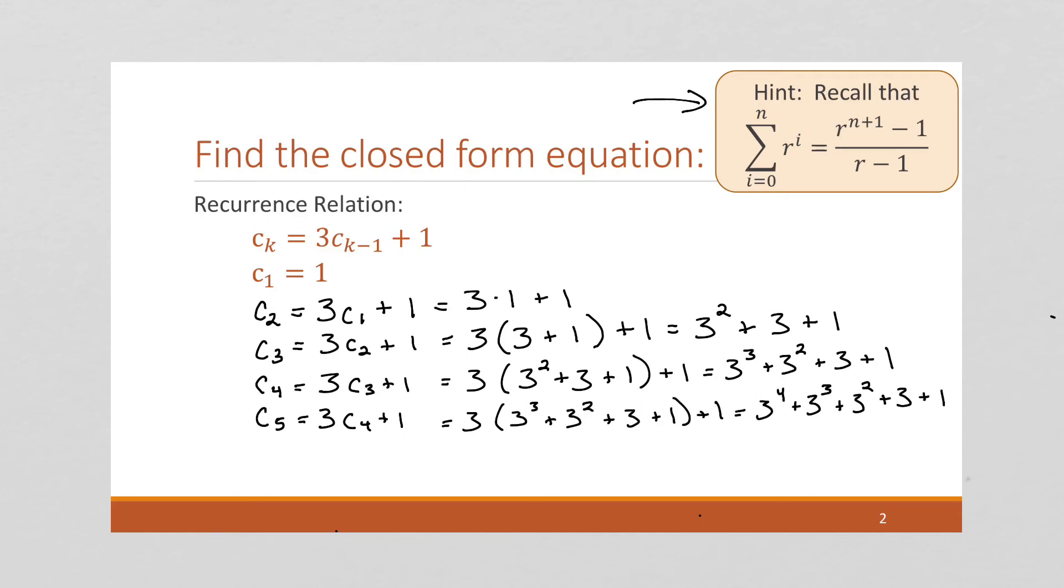And now something important to notice is that 3 is the same as 3 to the power of 1. And the number 1 is the same as 3 to the power of 0, right, because any number to the power of 0 is going to equal 1. So this is going to give us the sum of a geometric sequence.